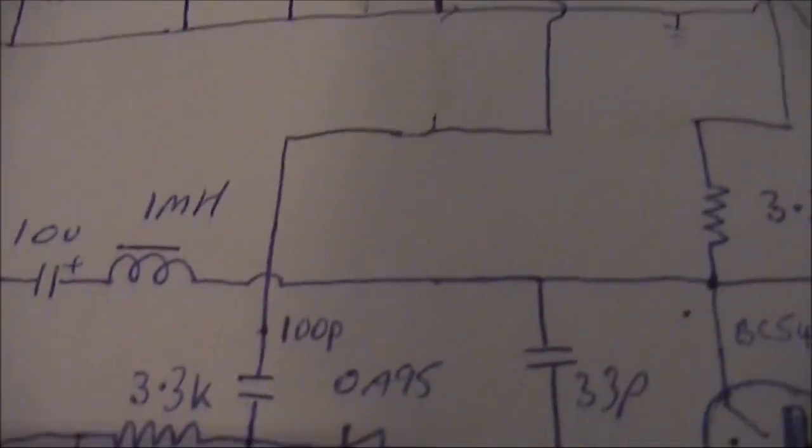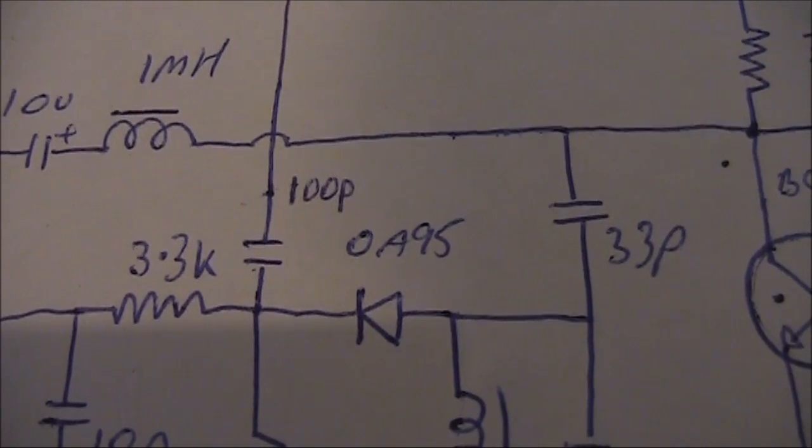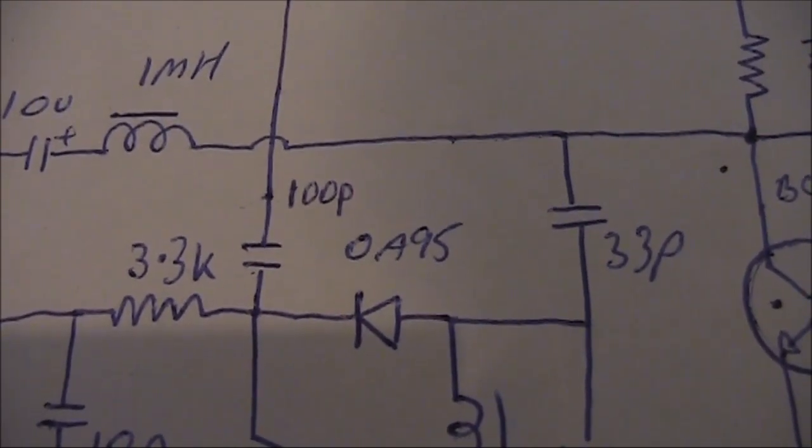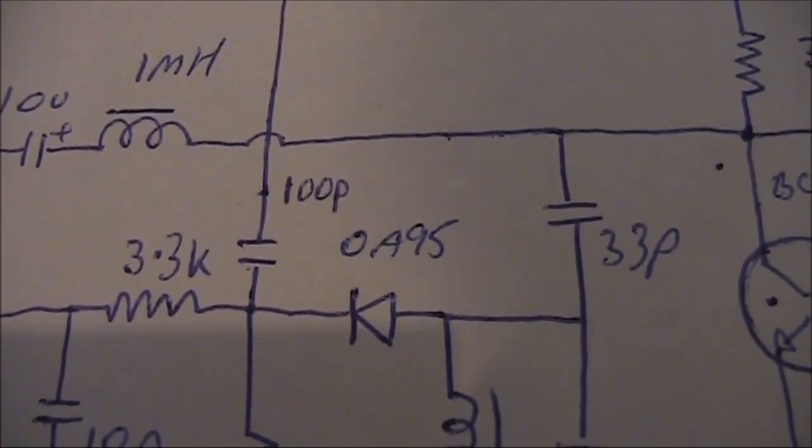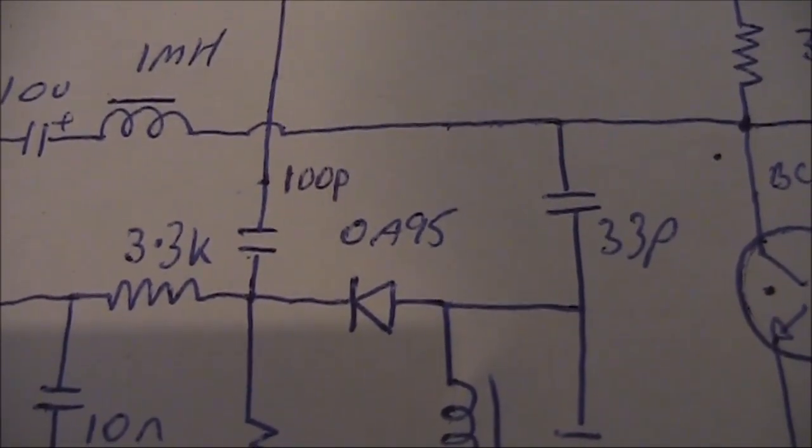The value that you use depends on the drive coming from whatever oscillator you're using. So if it's a higher drive level, then you can go for a lower value, like 10 pF.